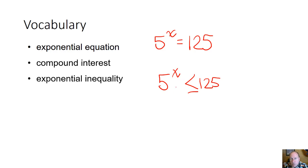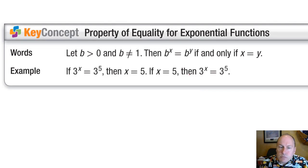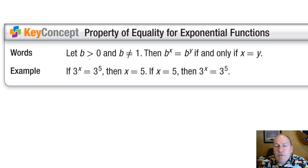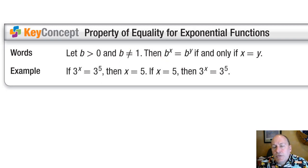It works very much like all the inequalities that you've used up to this point. The first technique we're going to look at is the property of equality for exponential functions: if the base is greater than 0 and not equal to 1 — because if it is, it's not an exponential function — then b to the x equals b to the y if and only if x equals y.